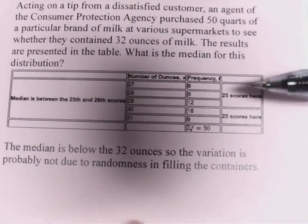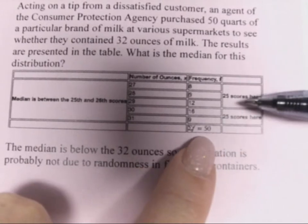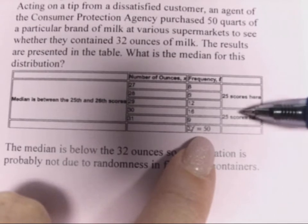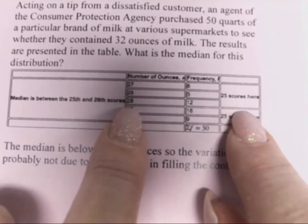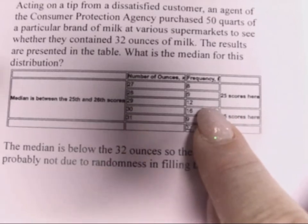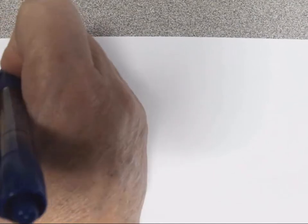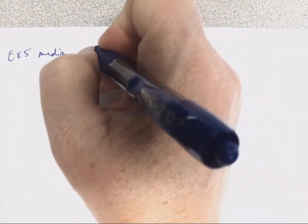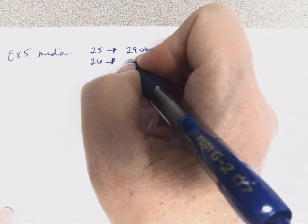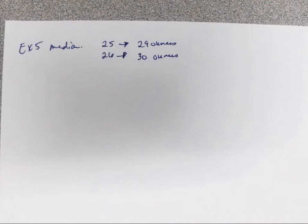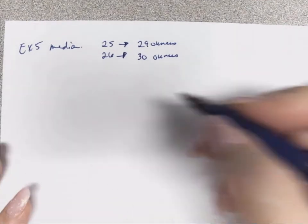What we need to understand is you have to look at the frequency and find the middle of them. There's a total of 50, and we were told that because they purchased 50 quarts. So we're looking for number 25 and number 26. There are 25 scores up here, so that means number 25 will land here at 29 ounces, and number 26 will be right here at 30 ounces.